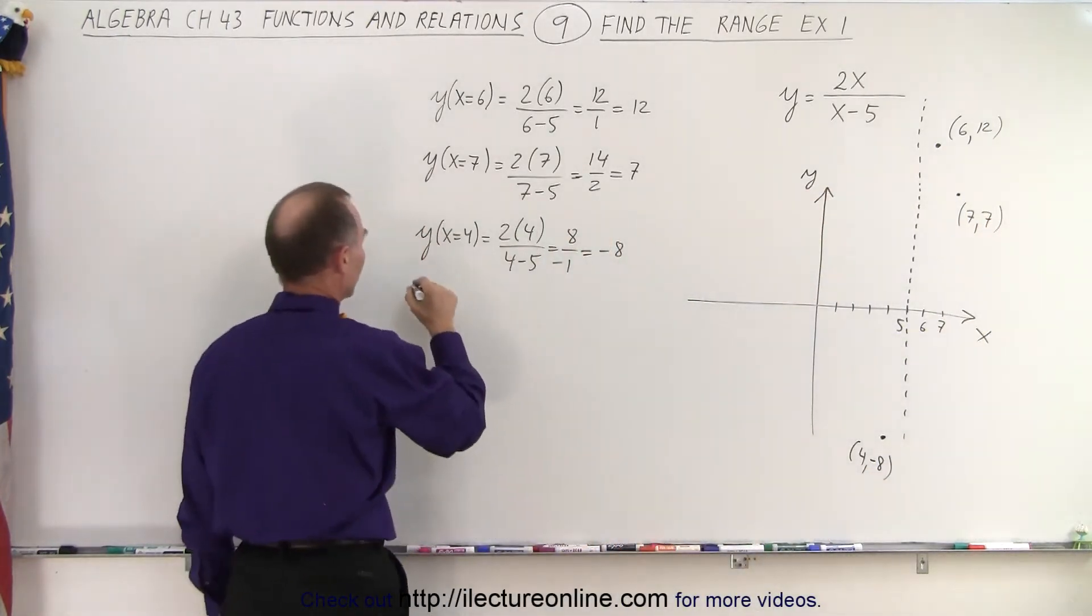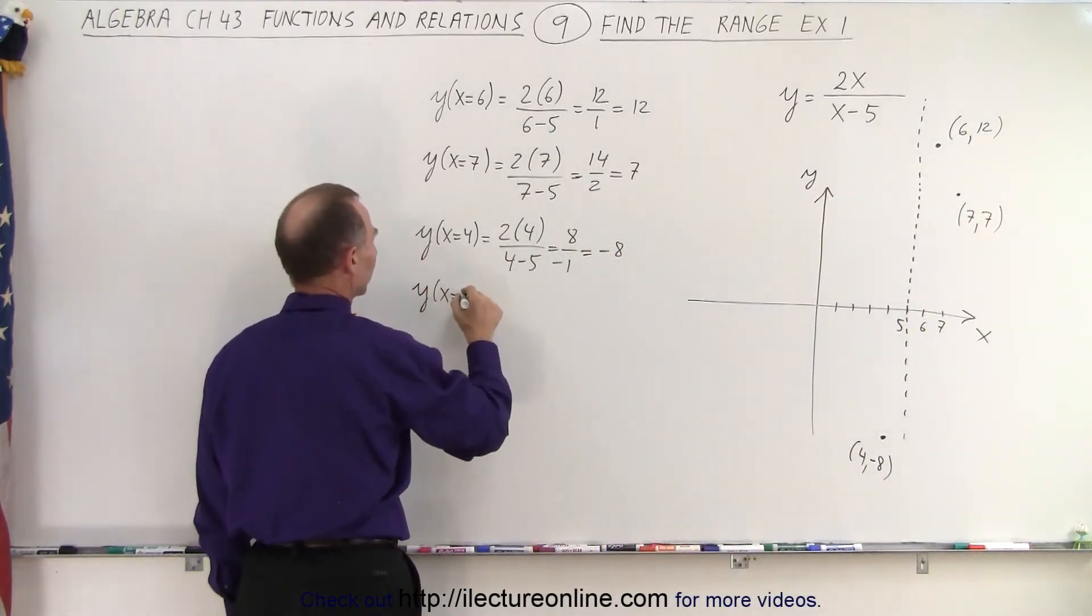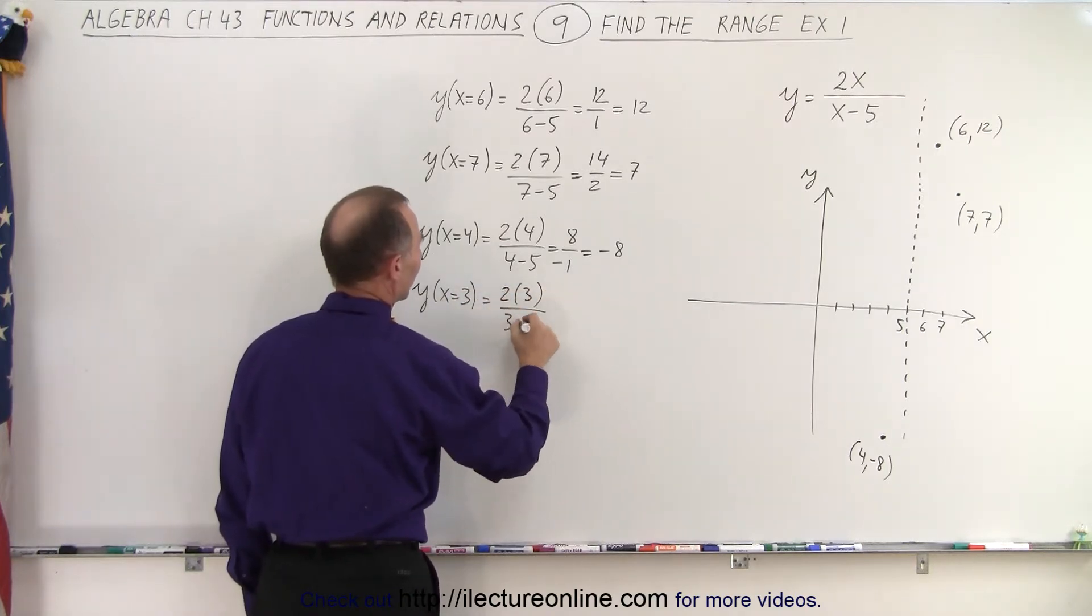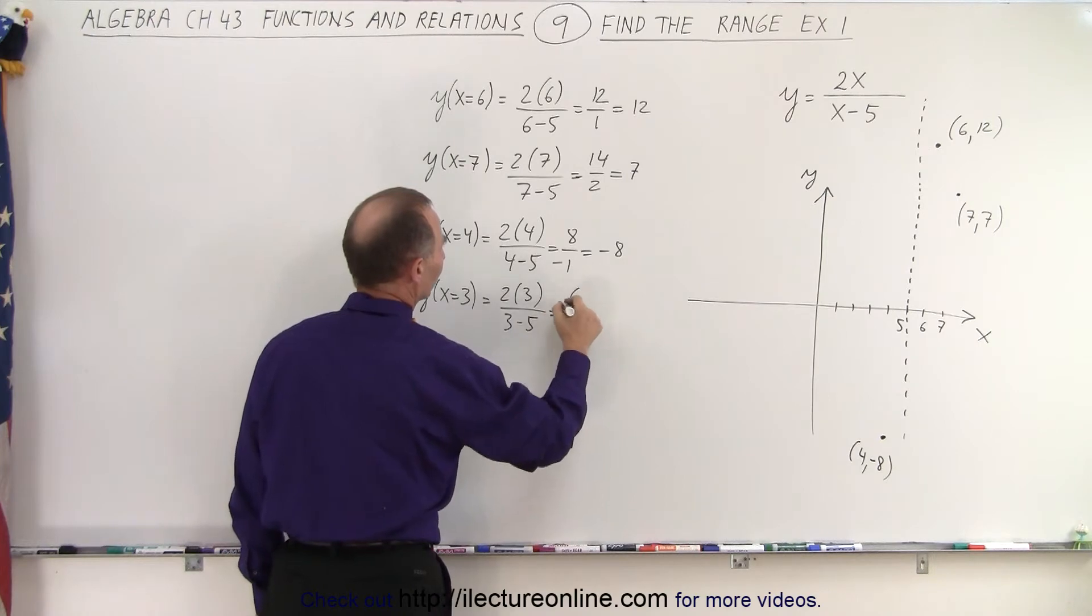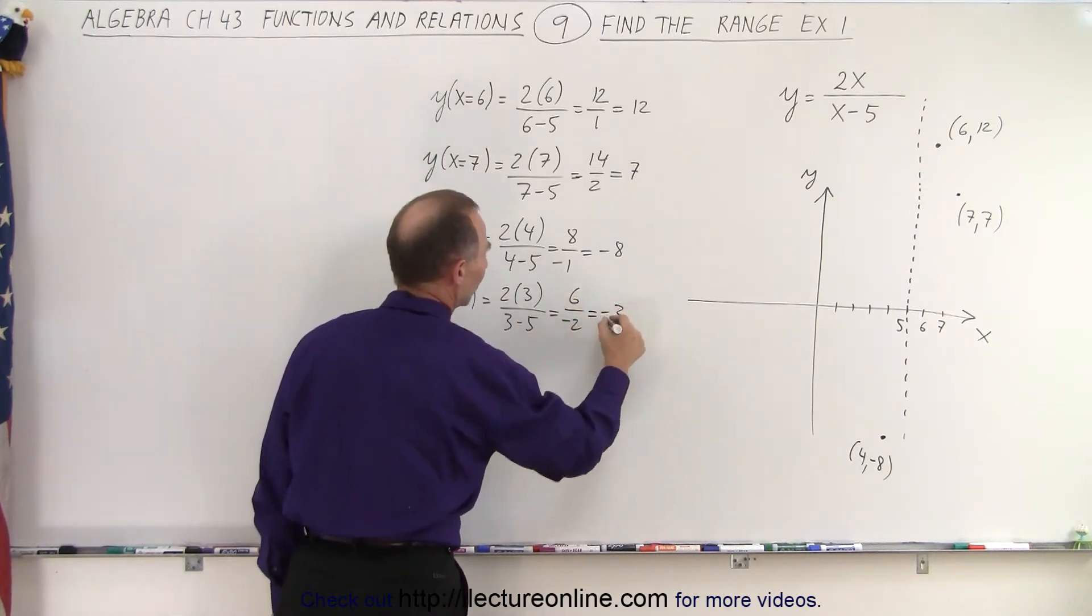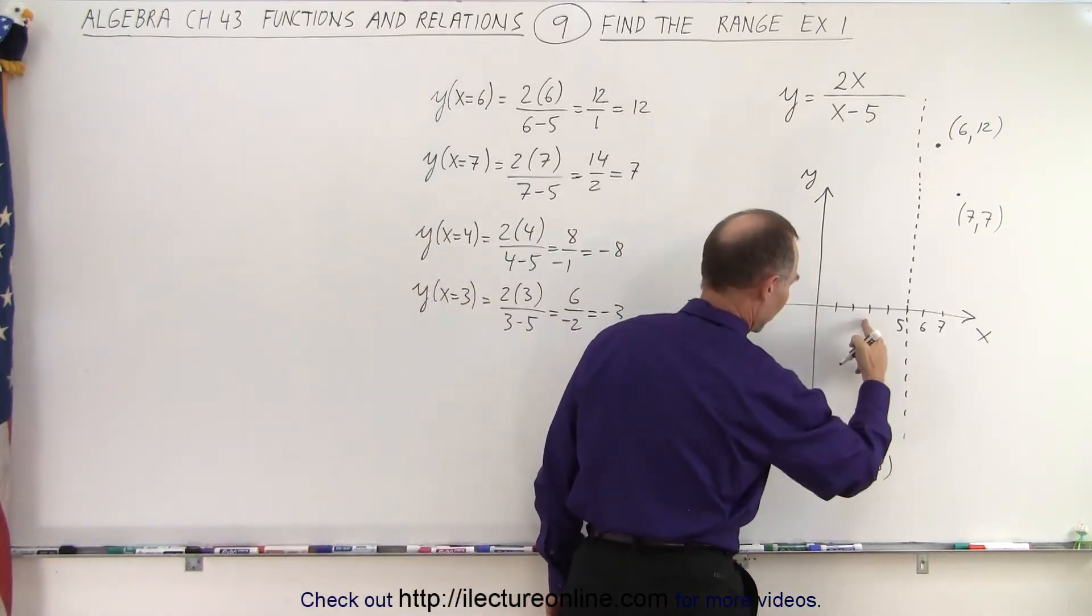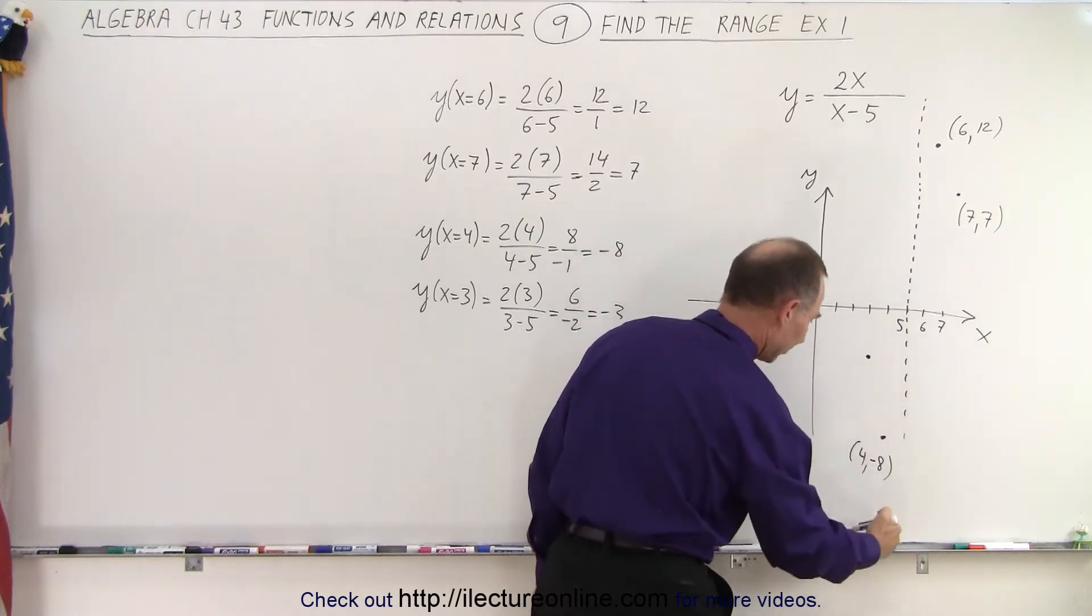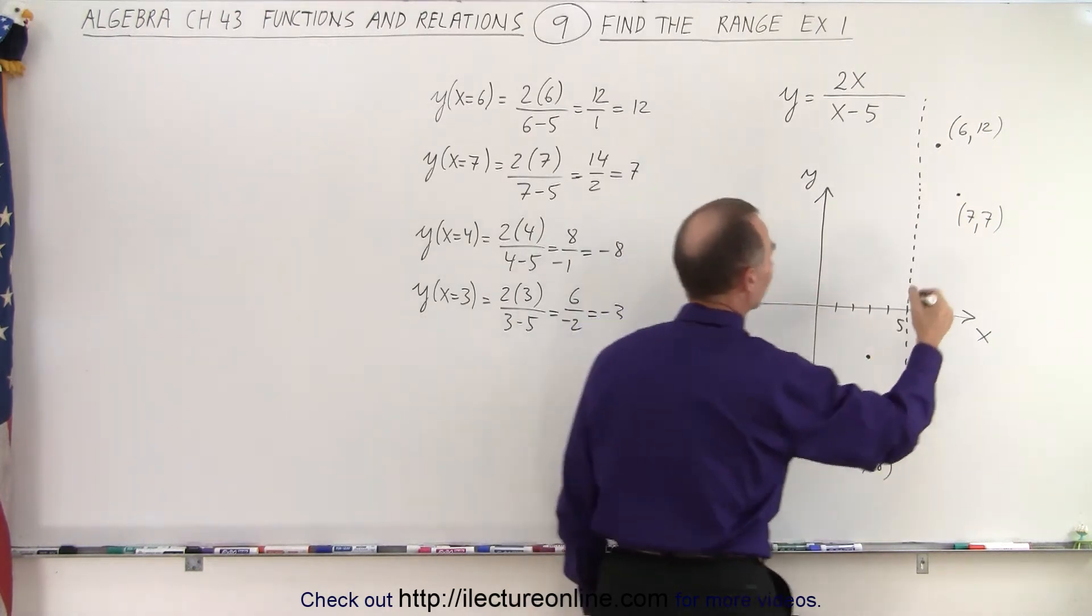And we'll try one more point. And y, when x equals 3, that's equal to 2 times 3 divided by 3 minus 5, which is 6 over negative 2, which is negative 3. So when x is equal to 3, y is equal to negative 3. So that's about there. So you can see that asymptotically, it looks like the curve looks like this.